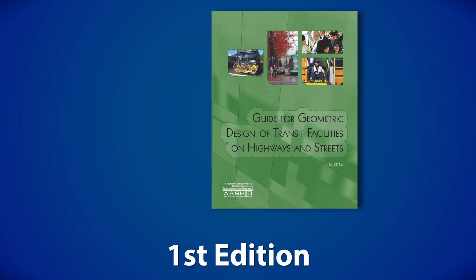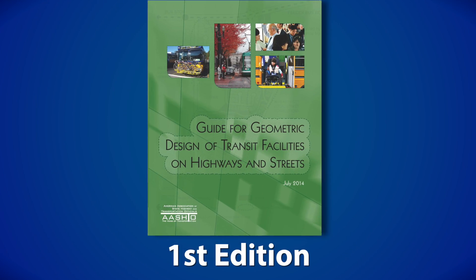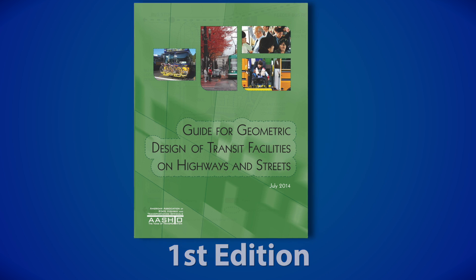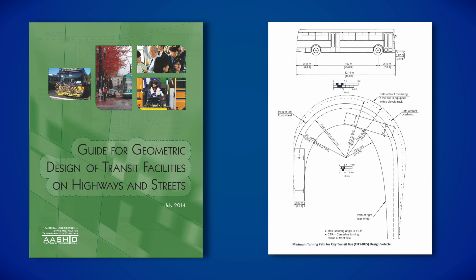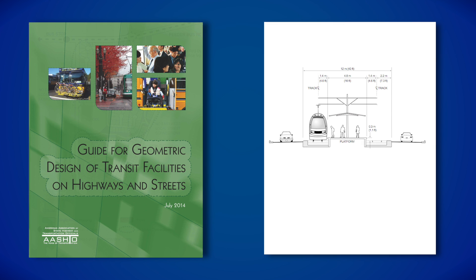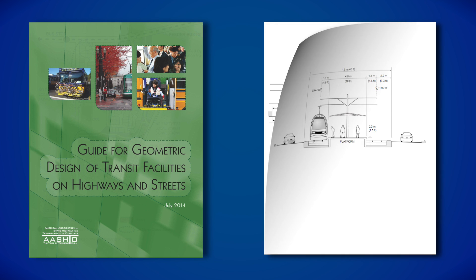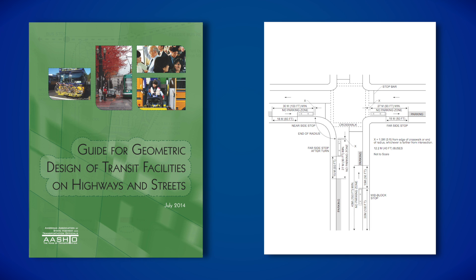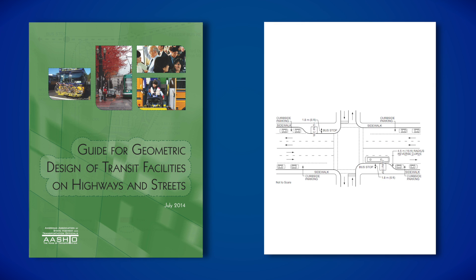On behalf of the AASHTO Subcommittee on Design, I'm pleased to announce the release of the first edition of the AASHTO Guide for Geometric Design of Transit Facilities on Highways and Streets. This new Transit Design Guide is a comprehensive reference for the geometric design of transit facilities within the rights-of-way of our streets and highways.